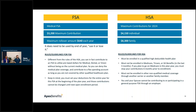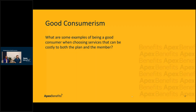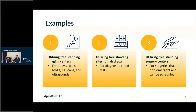Being a good consumer when choosing costly services: three examples. First, freestanding imaging centers — for X-rays, CT scans, and ultrasounds. Second, freestanding sites for lab draws for diagnostic blood testing. Third, freestanding surgery centers for non-emergent, schedulable surgeries like rotator cuff or knee replacement. All three can be accessed just by asking your physician for an order in a non-emergent situation.